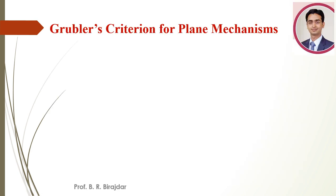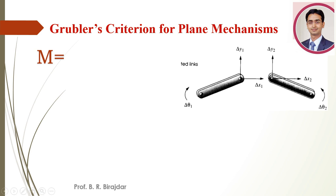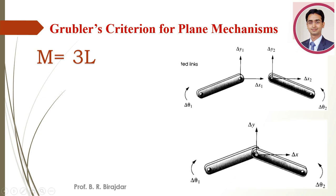Now we will see the Grübler criteria for the planar mechanism to find the degrees of freedom or movability M. Each link has three degrees of freedom, so generally we get three-L total degrees of freedom when not connected, where L is the number of links. When we connect two links, two degrees of freedom vanish per joint, so we subtract two-J, where J is the number of joints.